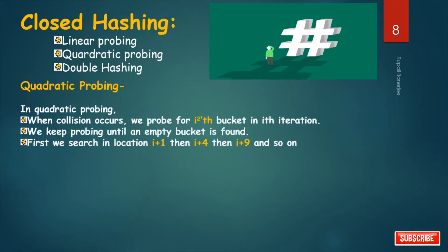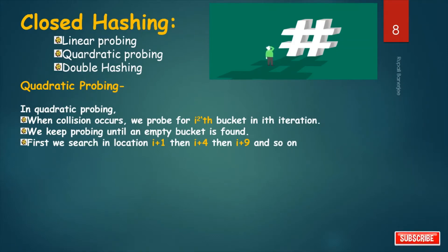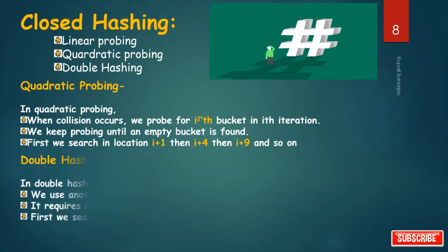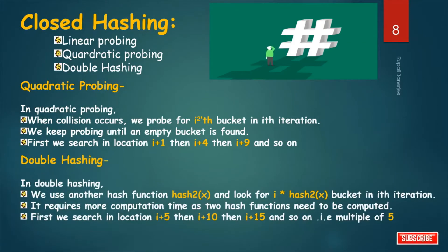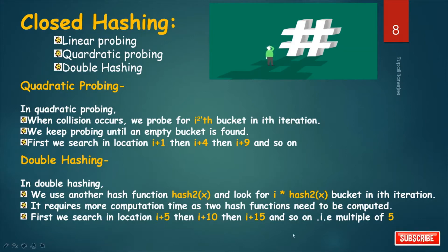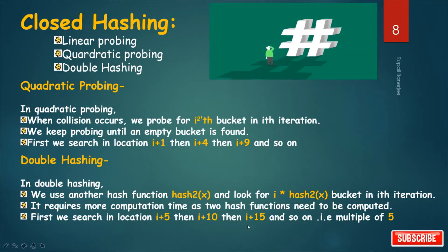In quadratic probing, when collision occurs, we probe for the i-squared bucket in the i-th iteration, continuing until an empty bucket is found. So we search at locations i+1, then i+4, then i+9, and so on. In double hashing, we use a second hash function hash2(x) and look at i × hash2(x) in the i-th iteration, requiring more computation time since two hash functions must be computed. For example, we search at i+5, then i+10, then i+15, and so on — multiples of 5.